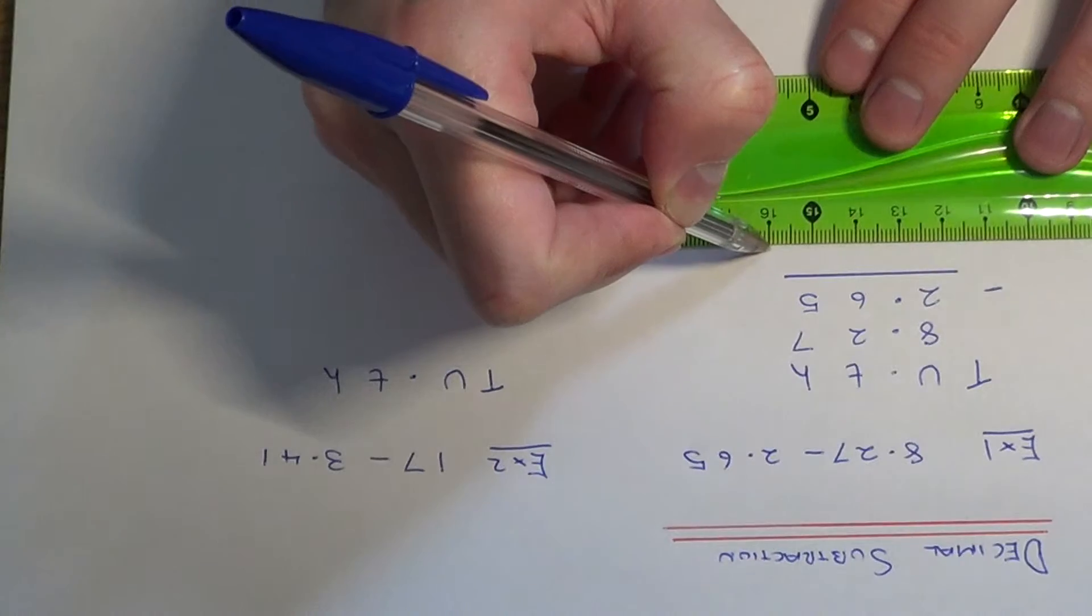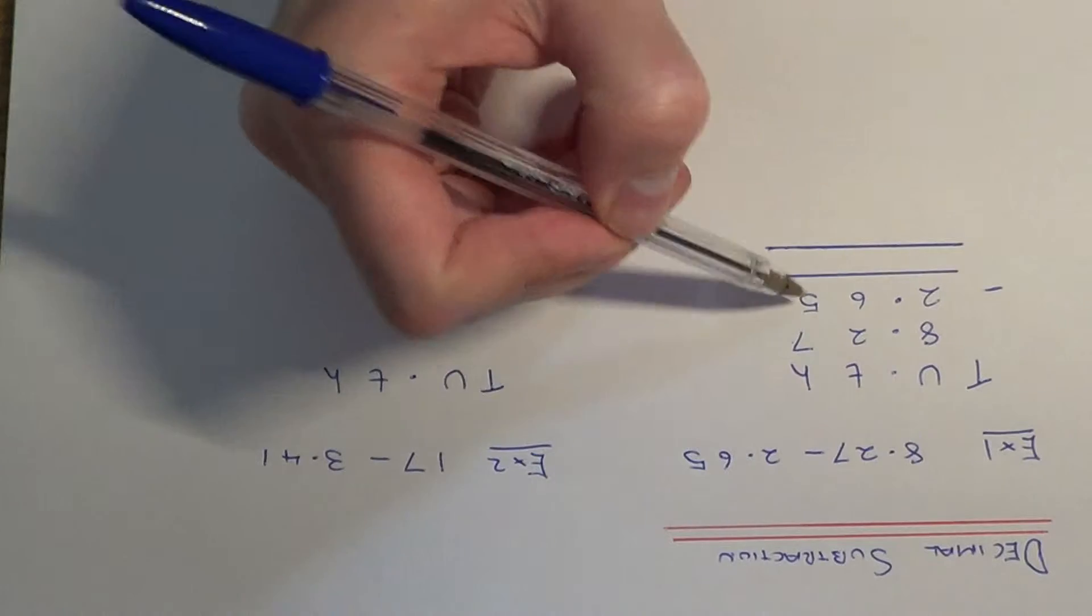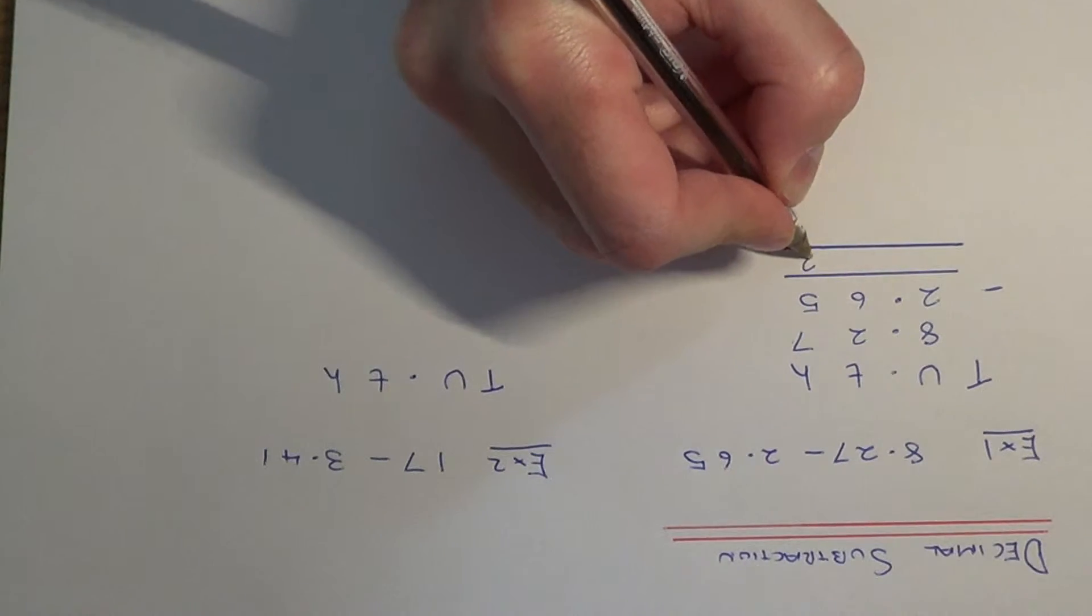So, just need to work this out now. So if we start on the right hand side, 7 take away 5 is 2.